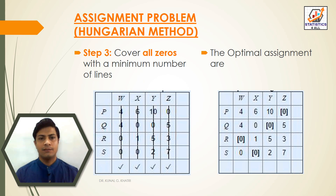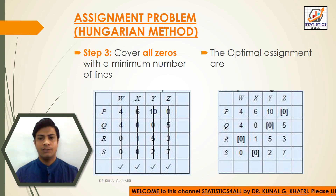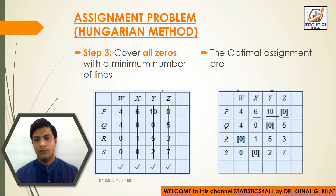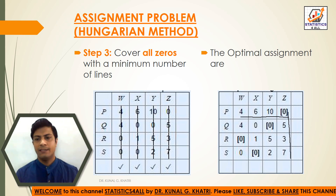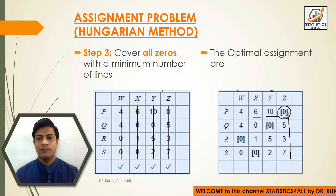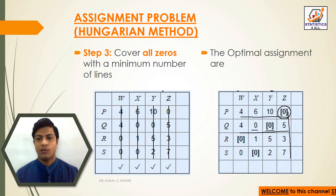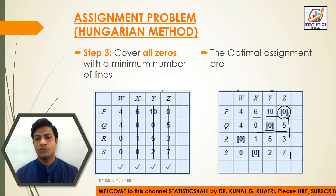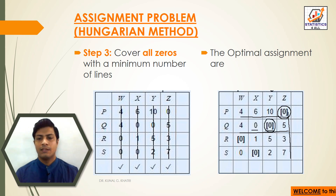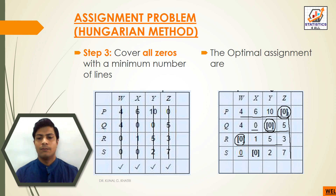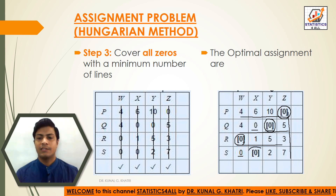After covering all zeros, we find the optimal assignments. There should be only one zero selected in each row and each column. In the first row, there is only one zero — we select it. In the second row, there are two zeros; we check columns and select the one whose column has no other selected zero. In the third row, we select the zero in the column with no prior selection. The fourth zero is selected automatically in the remaining column.